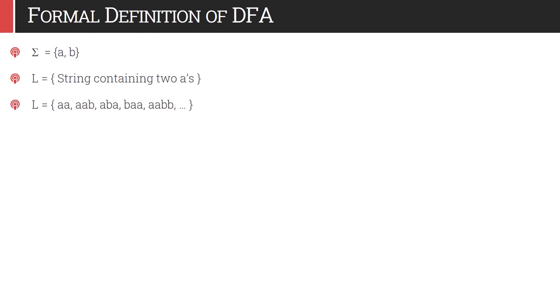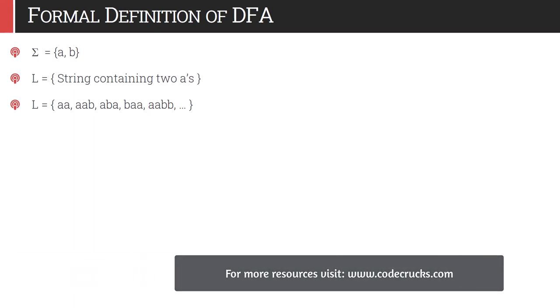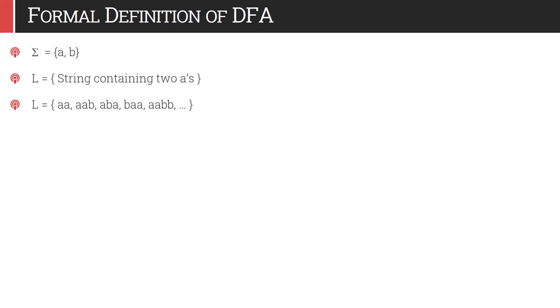If we write down possible strings in L, the minimum length string is 'aa'. Then we can have 'aba', 'baa', 'aab', 'aabb', and combinations like 'aababb', 'ababaa', and so on. As long as a string contains exactly two a's, it is a valid string that we can include in L.